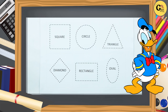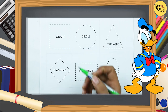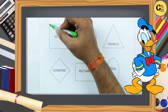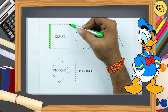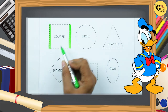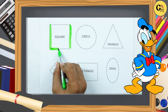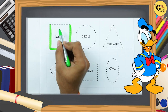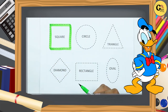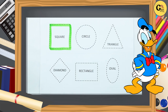Let's start. It's square. One line, two line, three line, four line. Two slipping line, two standing line. It's called square with green color.